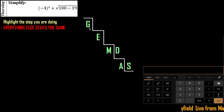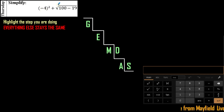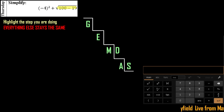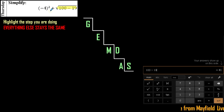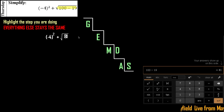I'm going to work inside the grouping symbol first. There's nothing to do in the first grouping symbol on the left, so I'm going to work inside the square root. I'll do 100 minus 19 — using the calculator, that gives me 81. Everything else stays the same, so make sure you see how we got from that first step to here.